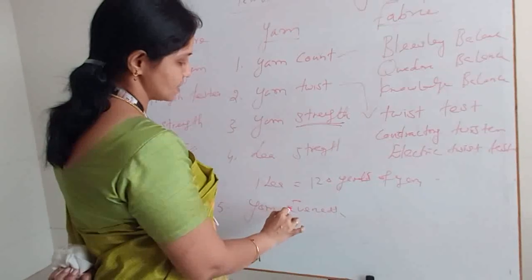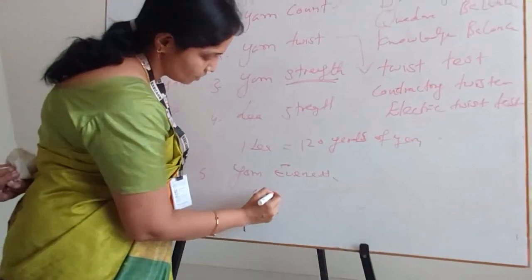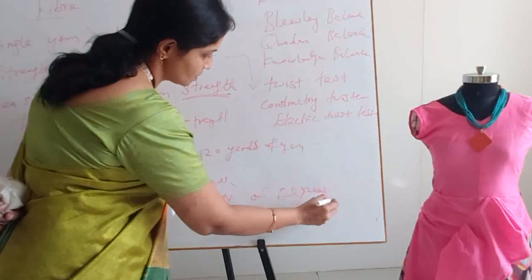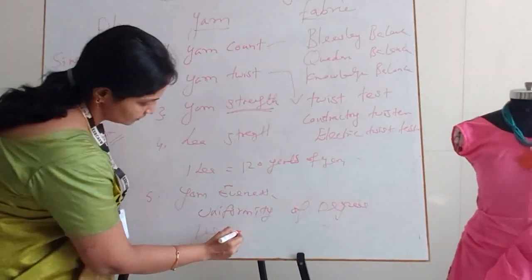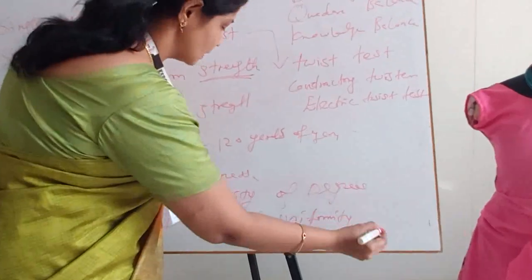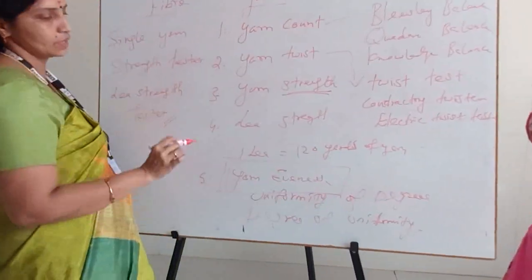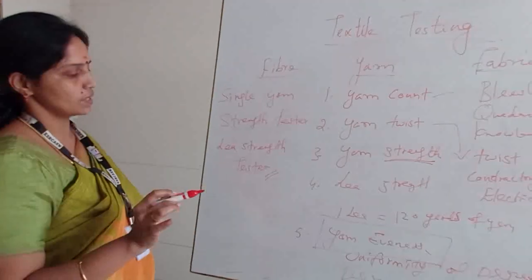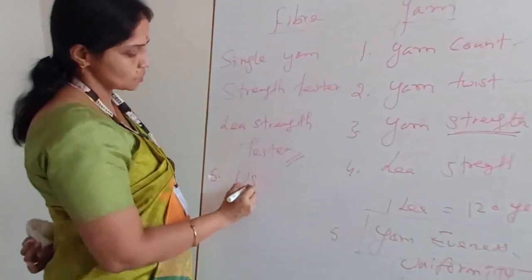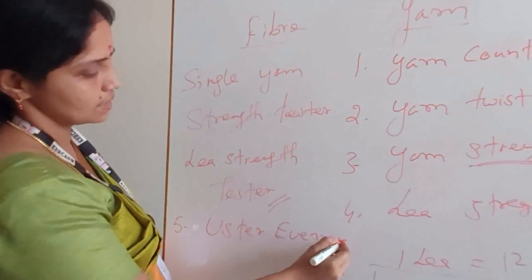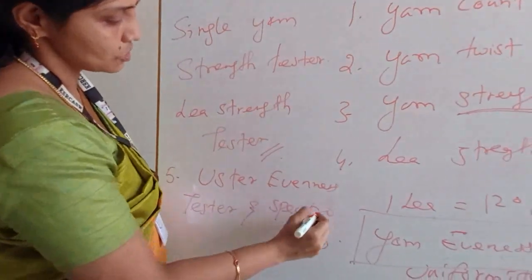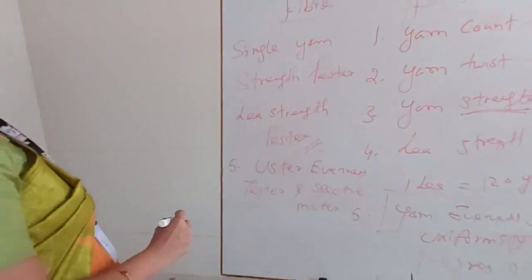The last one is yarn evenness. What is evenness? It is called the degree of uniformity — how far the yarn is kept even in a particular degree. That is called yarn evenness. To identify this, we have the Uster evenness tester and spectrometer. In the next session, we will see the fabric parameters and what instruments are used for those.